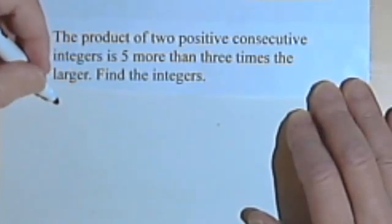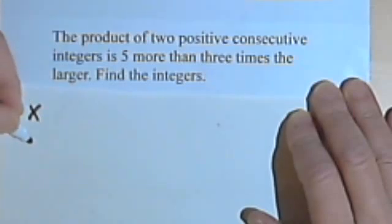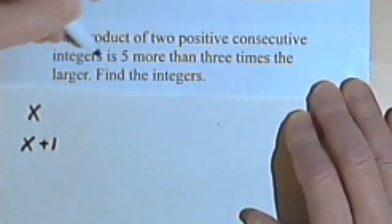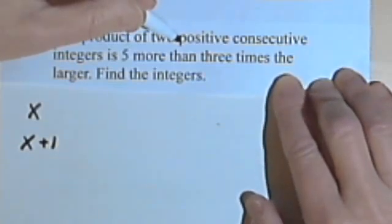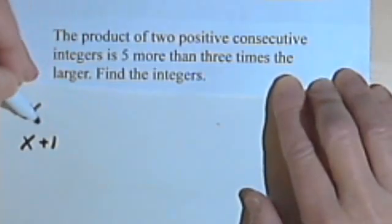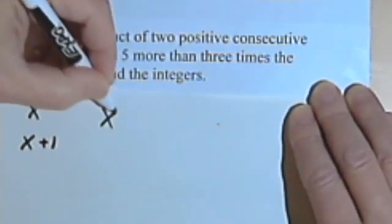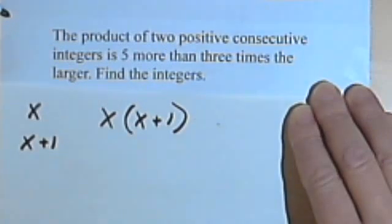So what we're gonna do is call the first integer x, and the second integer, since they're consecutive, would be one more, so that would be x plus 1. Let's see what it says about them. We have the product of two consecutive positive integers. So the product of these two numbers would be x times x plus 1.